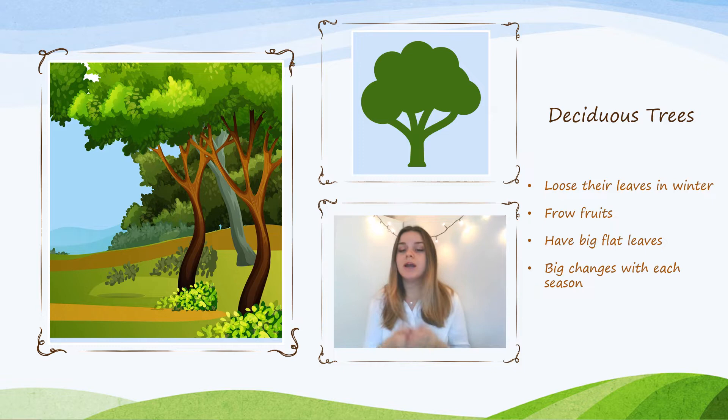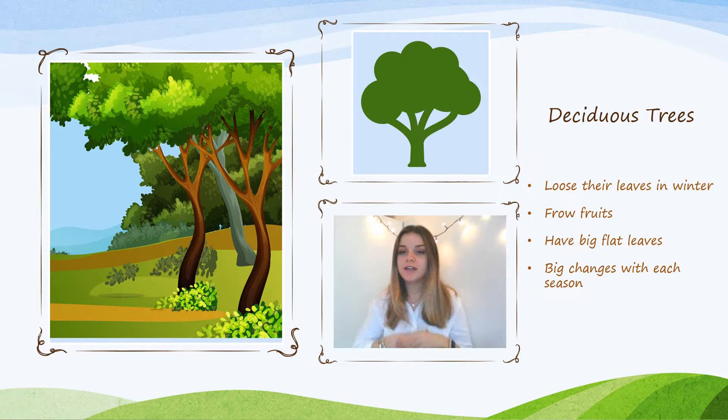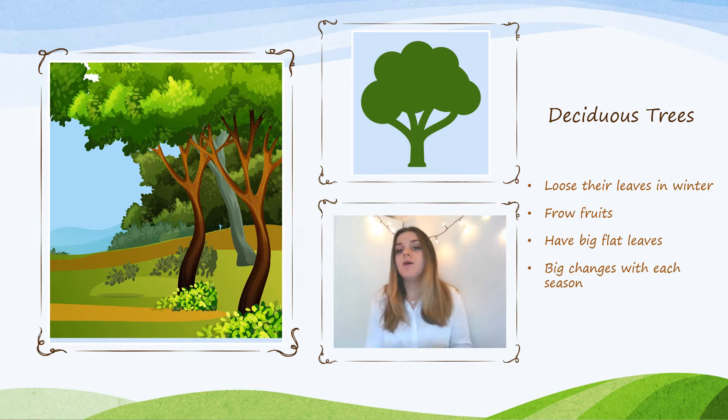We've been speaking about in our videos that there are two main kinds of trees: the deciduous trees and the coniferous trees. We just did a video about coniferous trees and identifying them — this is the deciduous tree equivalent. We need to remember that deciduous trees change a lot throughout the seasons, which is one of the main differences we can see when we compare them to conifer trees.